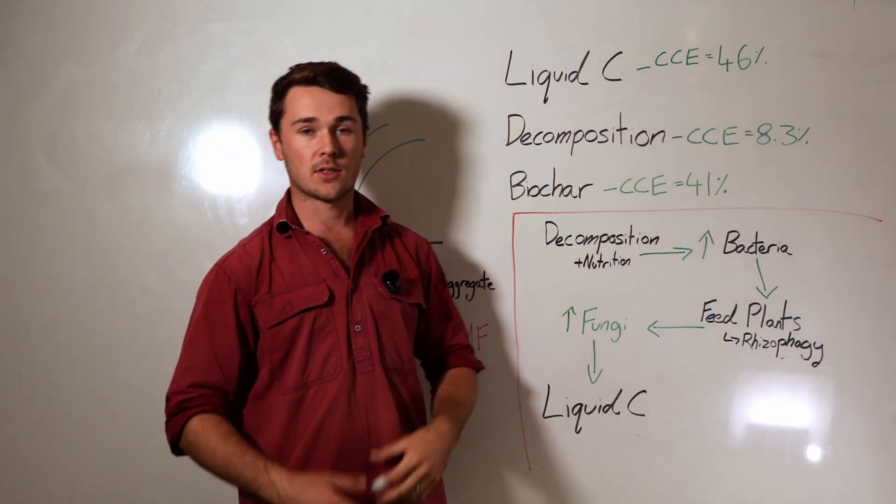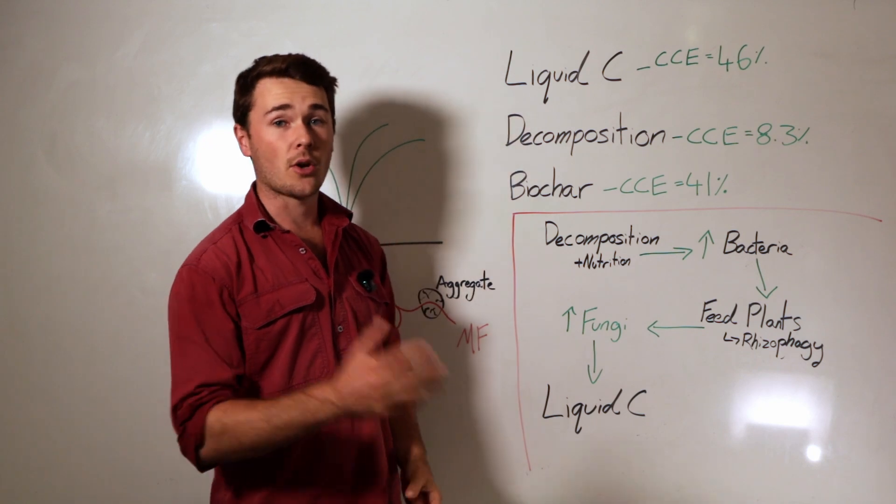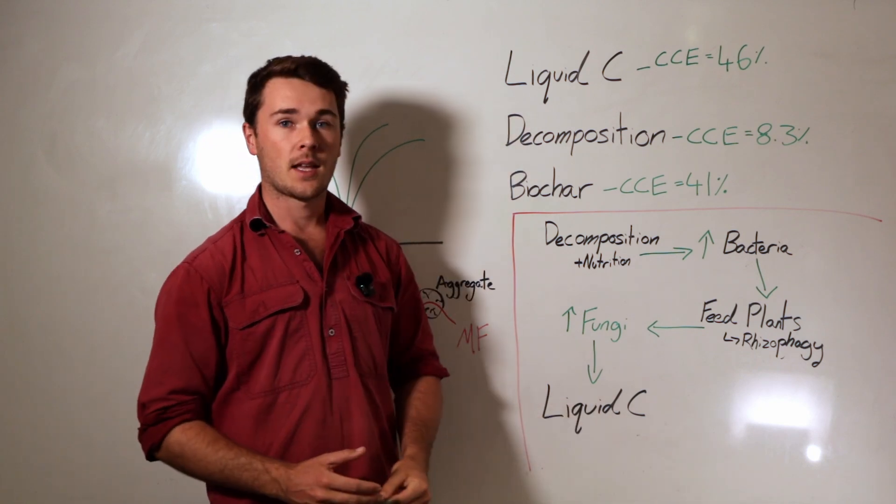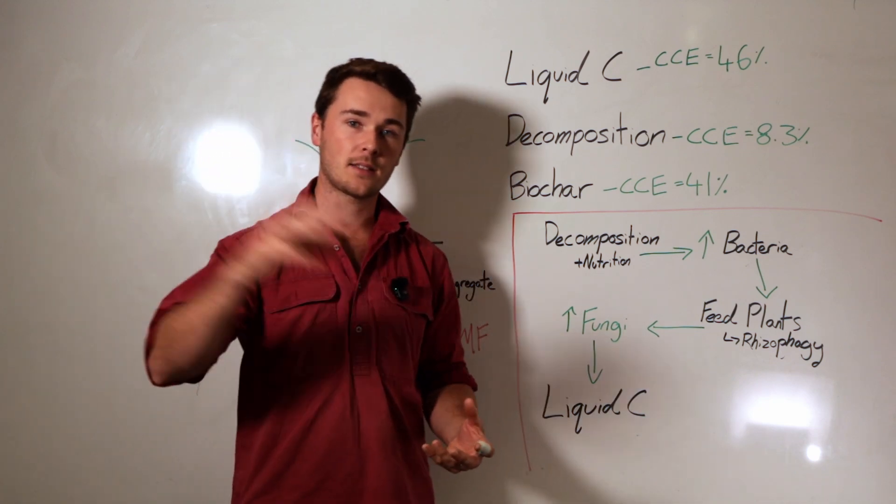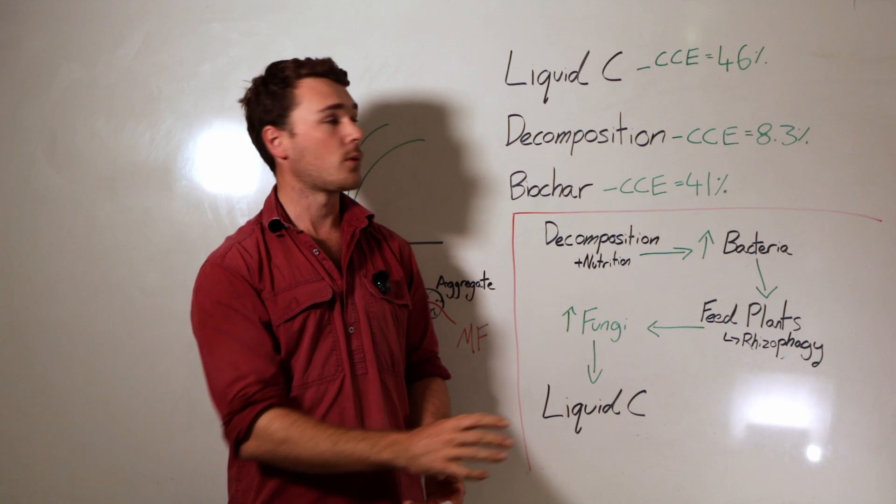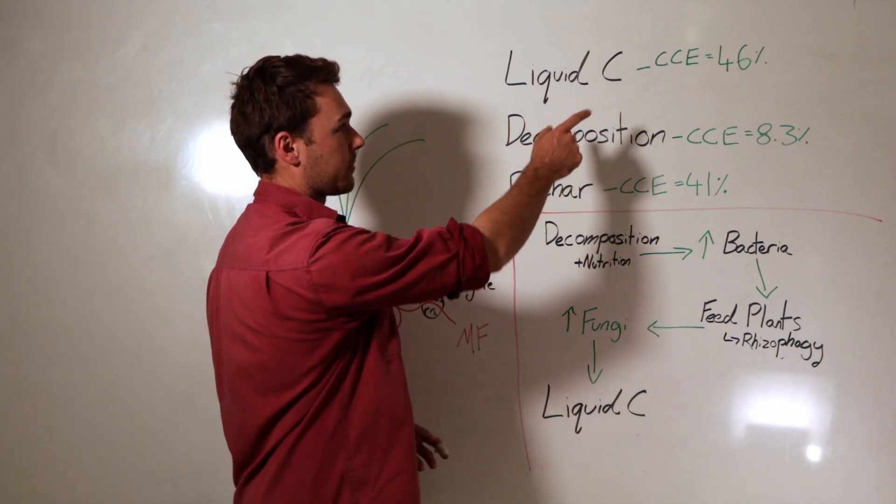The three pathways are: the liquid carbon pathway suggested by Dr. Christine Jones—go check out that video if you want to learn more—but effectively it has a carbon conversion efficiency, so the carbon that goes into the system gets converted into soil organic carbon, of 46 percent.